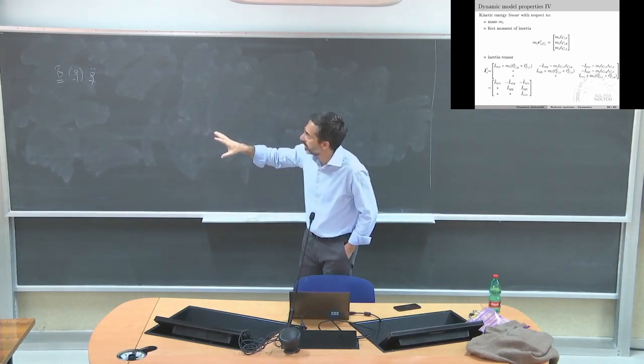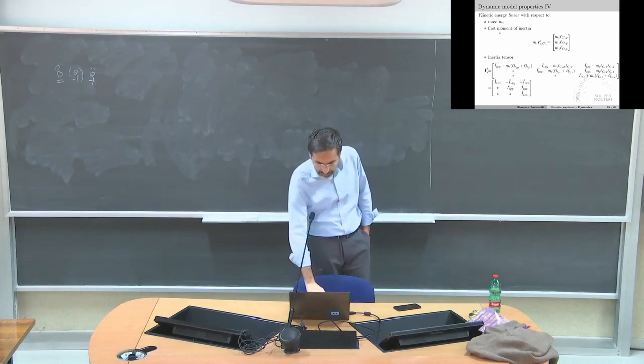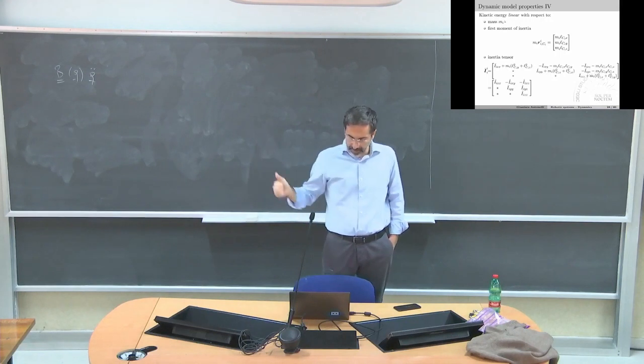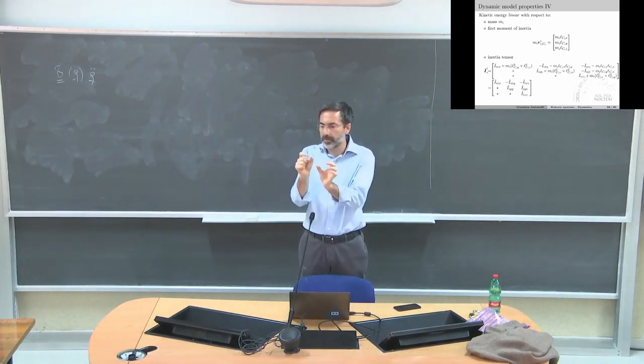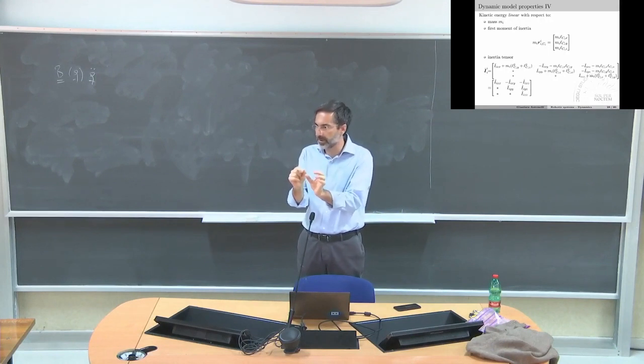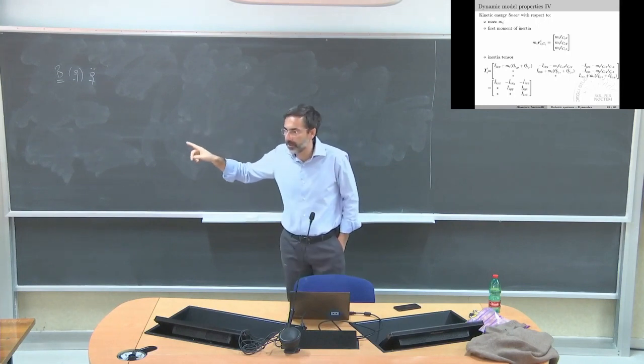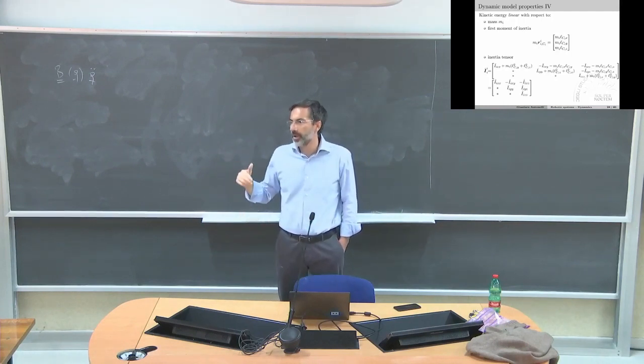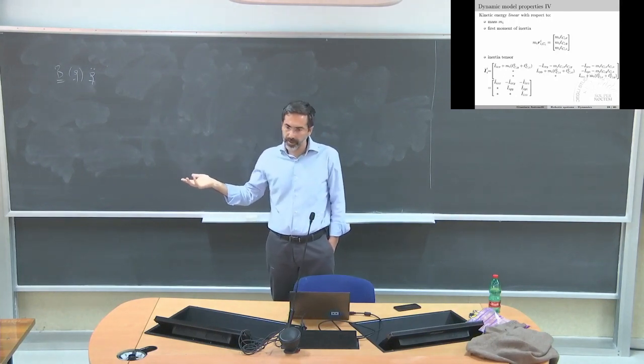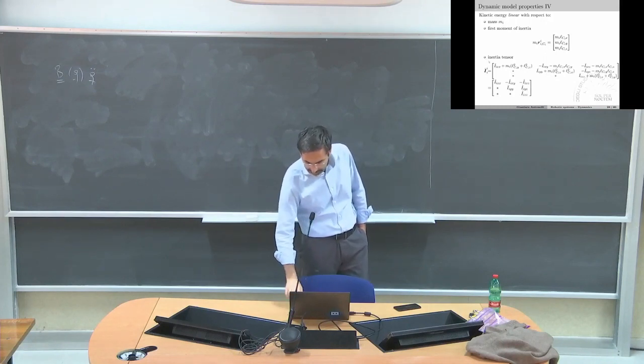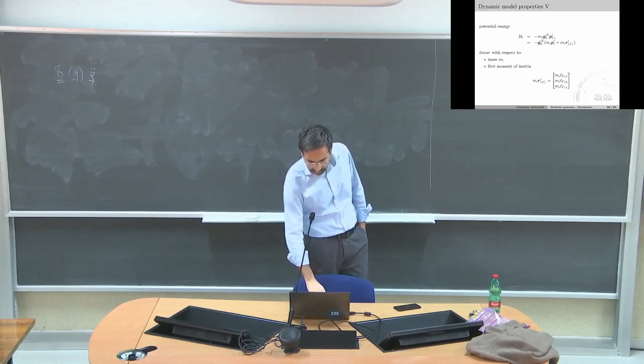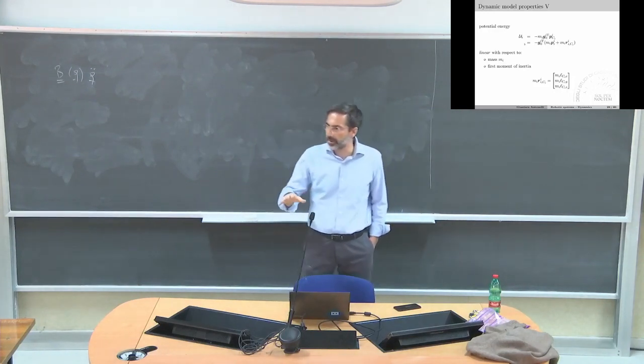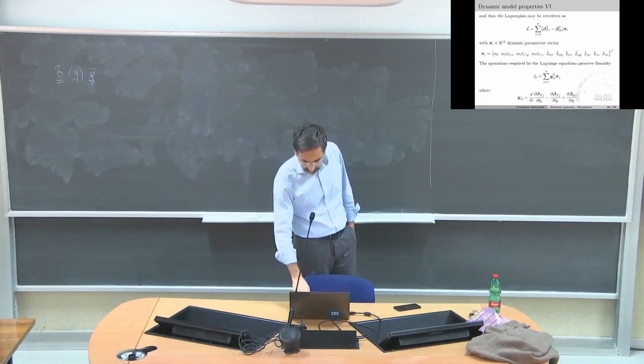The center of mass is a little bit less accurate than the inertia, because it depends where the masses are located. It can be demonstrated that for each link I can put on the right vector those constant terms: the mass, the first moment of inertia (the mass multiplied by the position of the center of mass - three elements), and then the inertia tensor. The inertia tensor is three by three - apparently nine, but it is symmetric. It means that I have six elements, not nine. For each link, I have ten dynamic parameters.